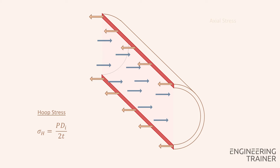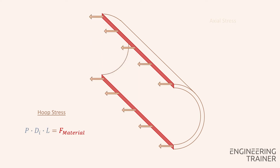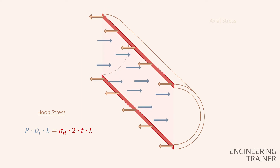A different approach to deducing this equation is to consider the force balance present in our system. On the left side we have the pressure force — so the pressure times the inner area A_P — and on the right side we have the forces inside the pipe material, so the material stress sigma H times the cross-sectional area A, which is 2 times the thickness times the length. We cross off the length since it is on both sides and we reorganize the equation to single out the hoop stress. We end up with the same result as before.